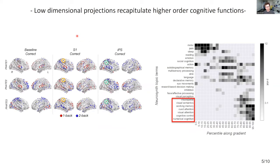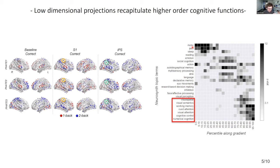To ensure this low-dimensional construction made sense, we performed a standard meta-analytic analysis to map how the loading of each dimension into the cortex mirrors known brain function. We were pleased to see that our three dimensions were highly linked to working memory, visual attention, cognitive control, and numerical cognition — all things that make sense in the context of an N-back task — and loaded very poorly into motor function, pain, and sleep. This served as a sanity check to confirm our low-dimensional construction captures functionally meaningful properties.